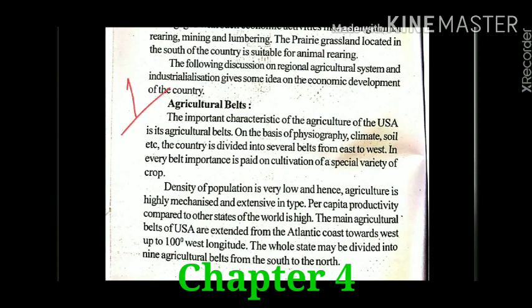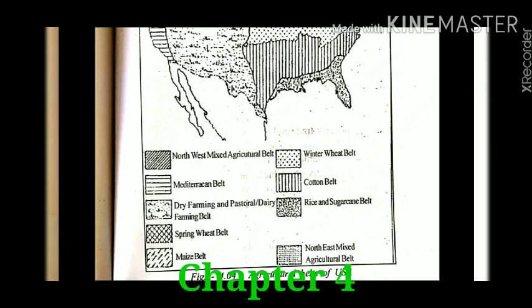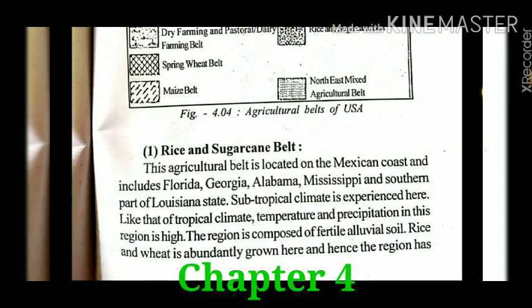On the basis of physiography, climate, and soil, the whole USA is divided into nine belts. These are: northwest mixed agricultural belt, Mediterranean belt, dry farming and pastoral dairy farming belt, spring wheat belt, maize belt, winter wheat belt, cotton belt, rice and sugarcane belt, and northeast mixed agricultural belt.